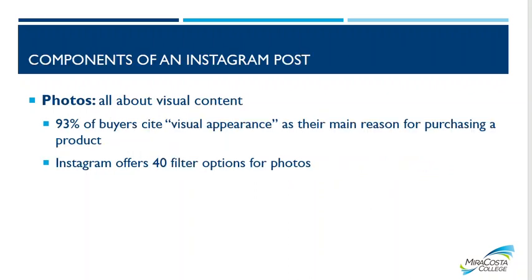Components of an Instagram post: obviously photos are the number one component — it's all about visuals on Instagram. 93% of buyers cite visual appearance as their main reason for purchasing a product. Instagram offers 40 filter options for photos. You can use the filters built into Instagram, filters on your phone, filters from another app, and then upload the photo. There are so many different ways of using filters.